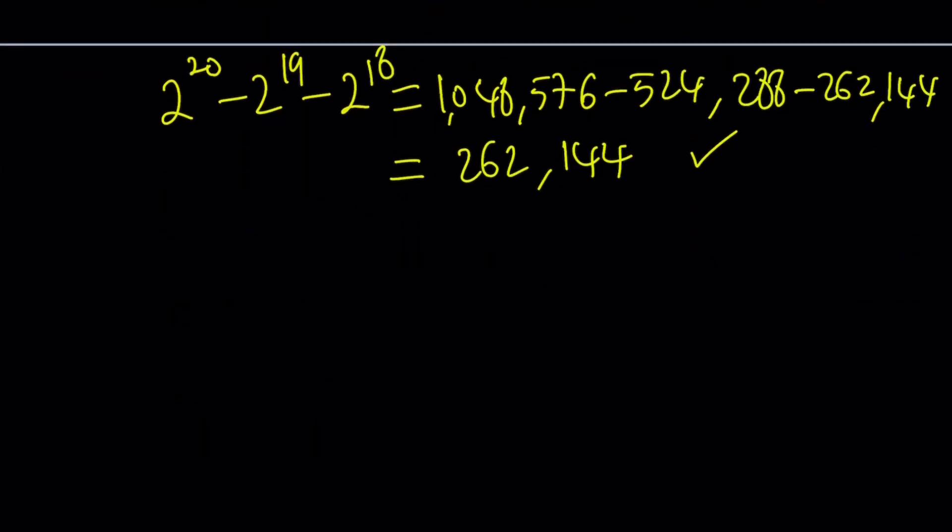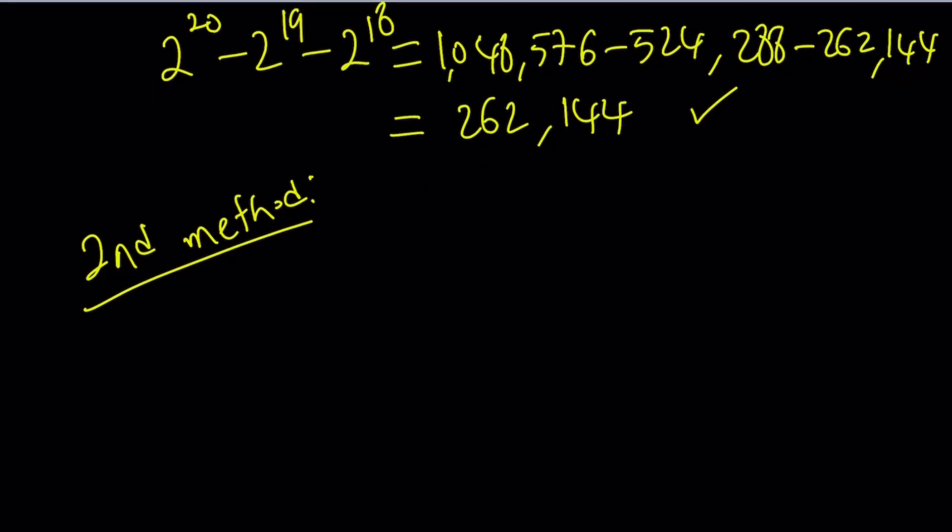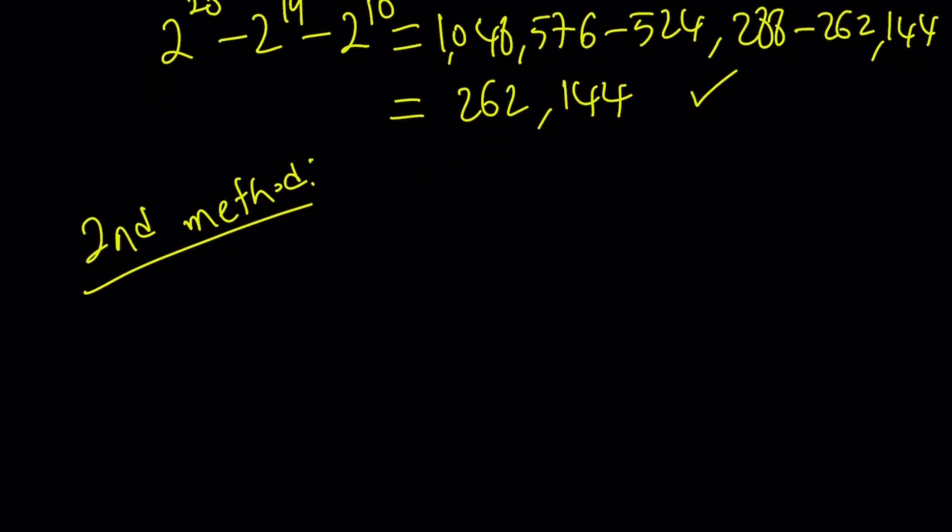Now here's the second method. I'm going to do everything backwards today. I hope you don't mind. I know some people don't like this, but first, second, third, we're going to do it backwards. Second method. Well, it's kind of nice because second method is done the second. So we have 2 to the power 20 minus 2 to the power 19. And I apologize for my handwriting. I guess I'm rushing.